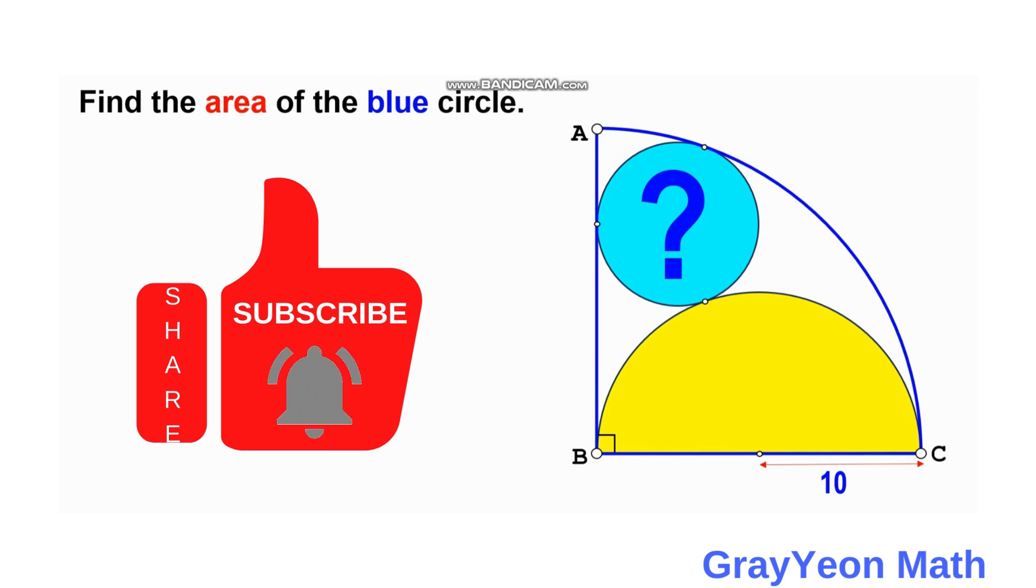We have this quarter circle with the white shade, and inside this quarter circle is a semicircle which is the yellow one with a radius of 10 units. And this blue circle is a tangent to the semicircle and the quarter circle, and we are required to find the area of this blue circle.